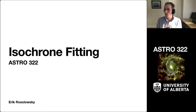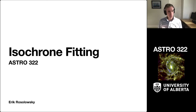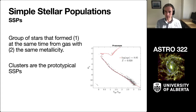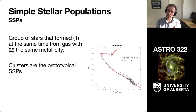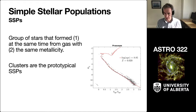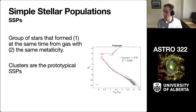So what I wanted to talk about today was this process that we call isochrone fitting. And you probably saw something about that when you were going through your Gaia reading exercise, just to kind of put the thinking of it together. The idea in isochrone fitting is that we're going to try to determine the properties of what we call a simple stellar population — a group of stars that formed all at the same time from gas at the same metallicity.